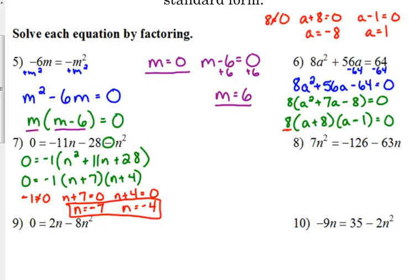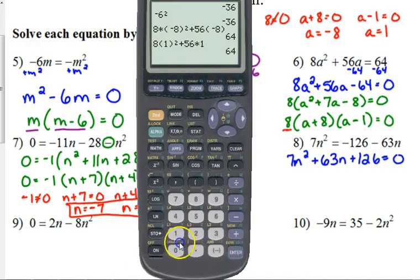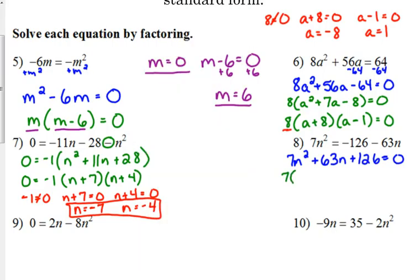Next example. We've got 7n squared is equal to negative 126 minus 63n. Again, everything must be on one side. So my quadratic term is on the left side and it's positive. So even though it requires moving two things, I'm going to move the other two terms. So both of them are negative, so that means that they are added to both sides. I'll move both of them by adding because they were negative. Let's see here, is 126 divisible by 7? Yes.